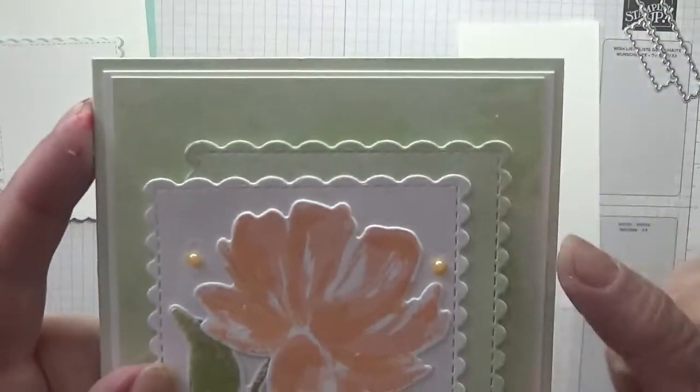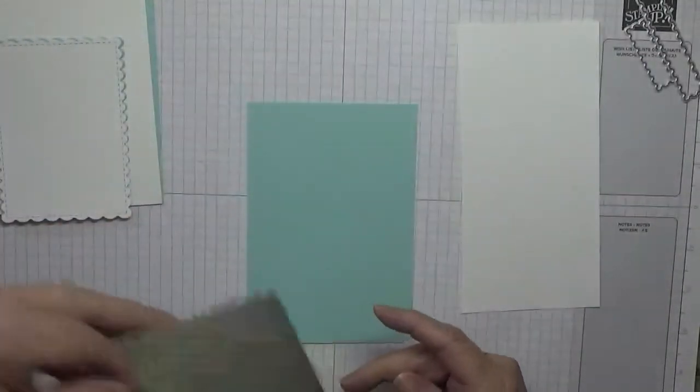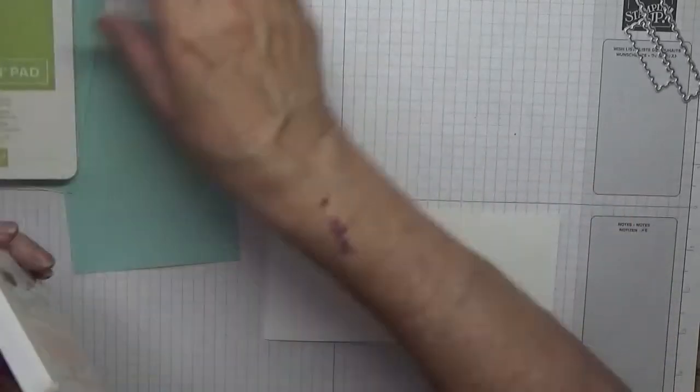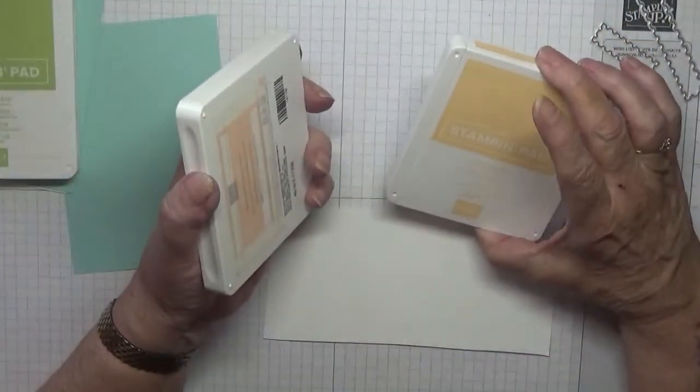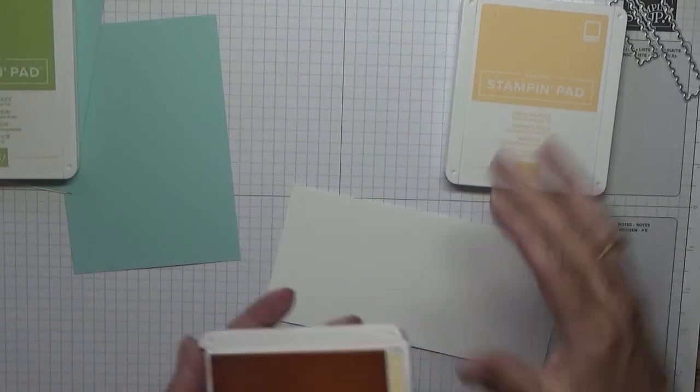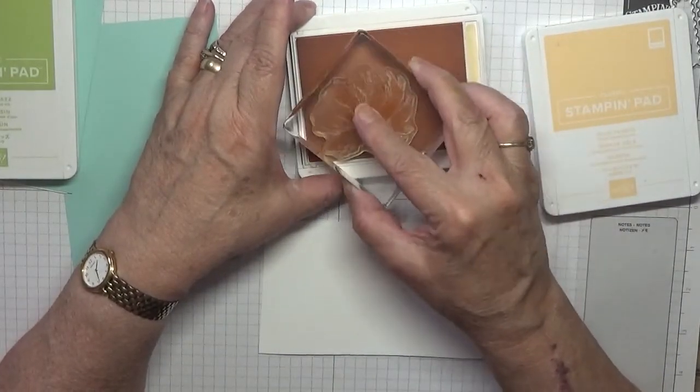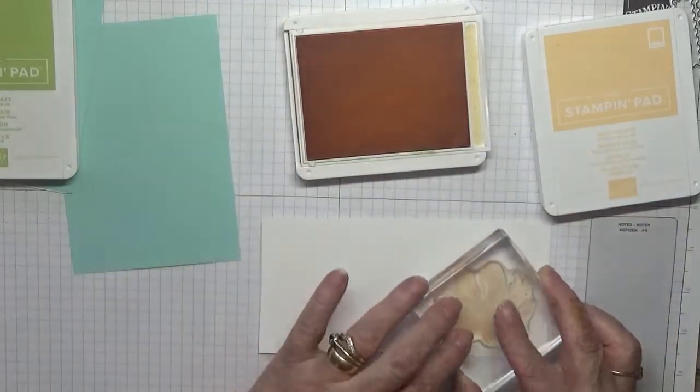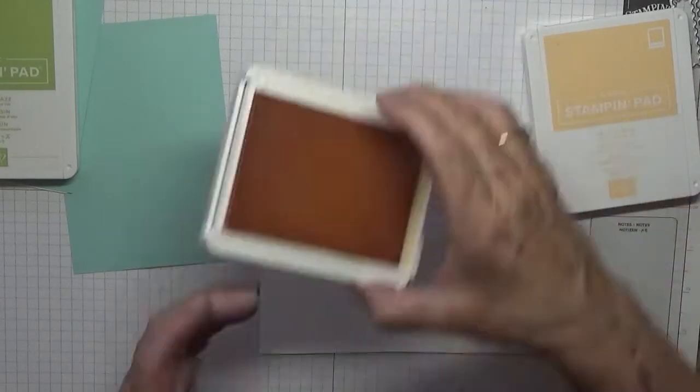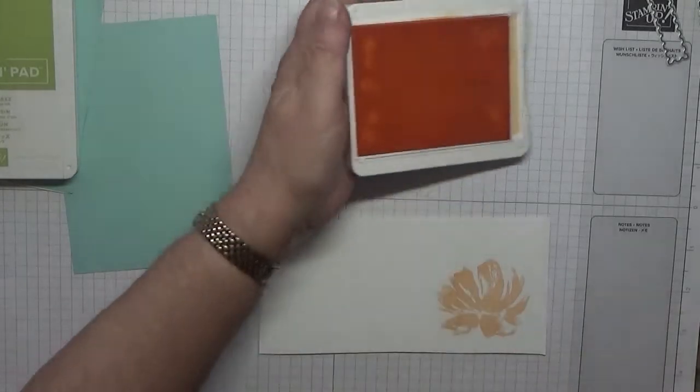Alright, we need to do our stamping on this piece. First of all, our flower. Now I have got Pale Papaya and Petal Pink. With Petal Pink we did the first layer, and we stamped that down like that, and we got that.